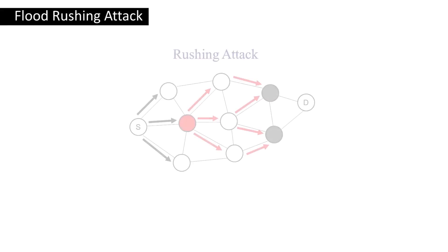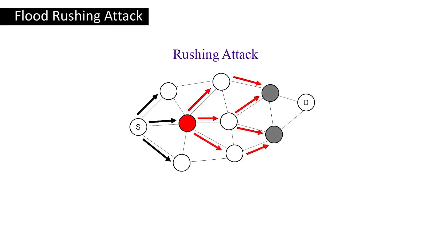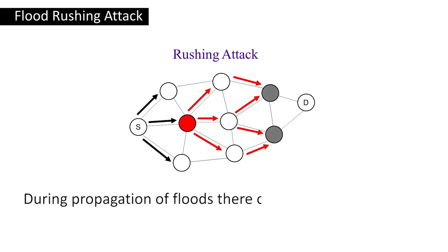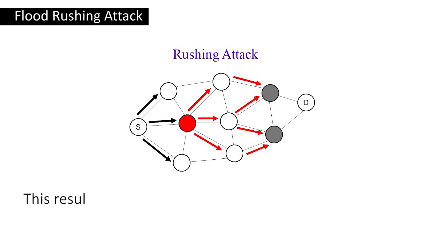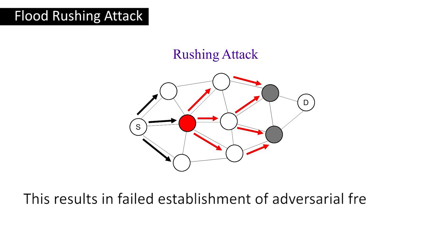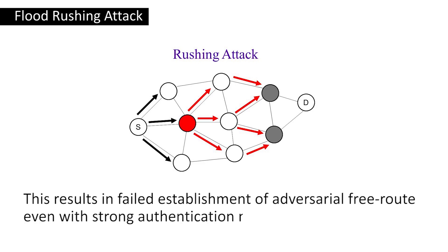Next comes the flood rushing attack. During the propagation of floods, there is a race between the legitimate flood and the adversary flood based on traffic. This results in a failed establishment of an adversarial-free route, even with strong authentication methods.